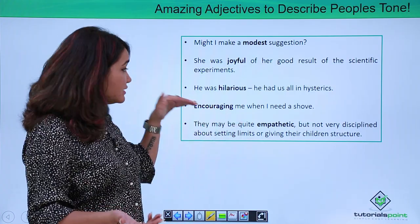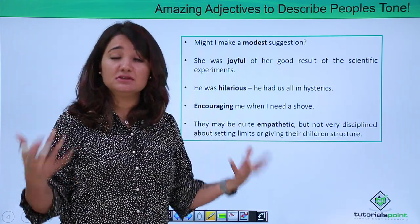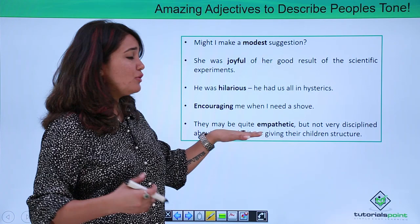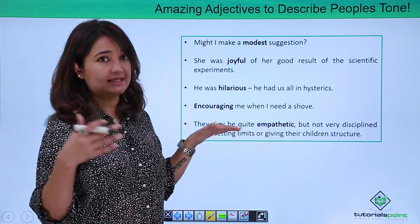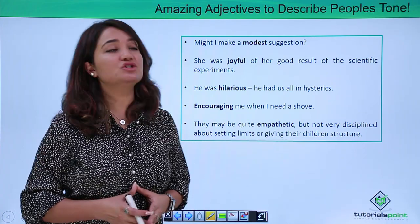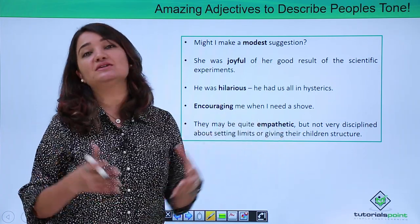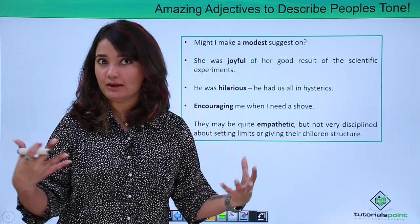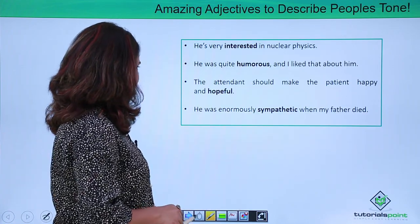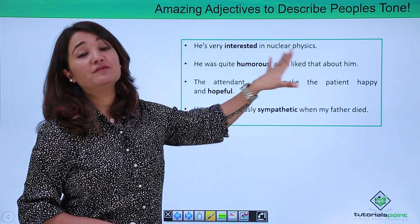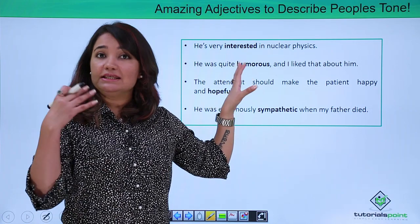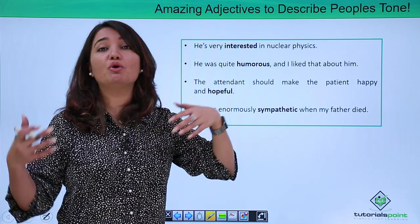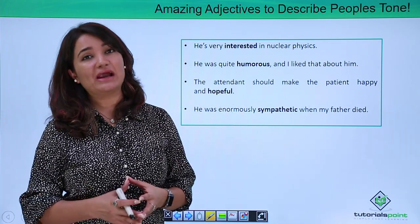"Encouraging me when I need a push." Encouraging is yet another adjective which can be used to describe the tone of people. "They may be quite empathetic but not very disciplined about setting limits or giving their children structure." Empathetic is another adjective to describe tone, conduct, feeling, or expression. "He's very interested in nuclear physics." Interested is yet another adjective you could use for someone's expression, feeling, conduct, behavior, or tone.